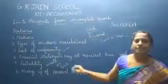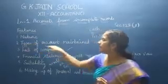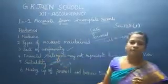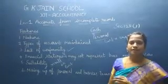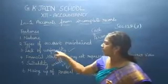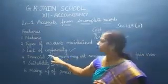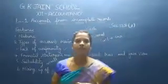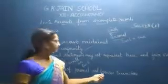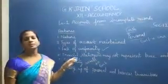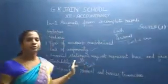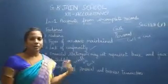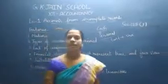So these are all the features of incomplete records. To summarize: first, nature — it is unsystematic. Second, types of accounts maintained — only cash and personal accounts of customers and creditors. Third, lack of uniformity — different organizations have different levels, and when accounts are not maintained properly there is no uniformity. Fourth, financial statements may not represent a true and fair view — if information is missed we cannot get an accurate statement. Fifth, suitability — suitable only for small traders or partnerships, not joint stock companies. Sixth, mixing up of personal and business transactions.